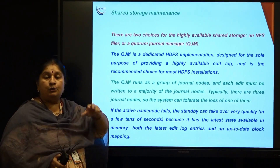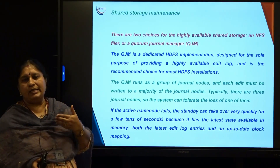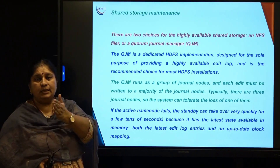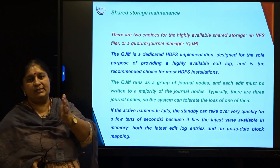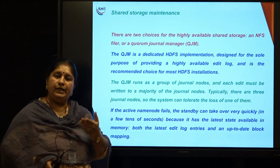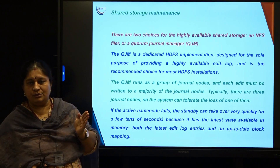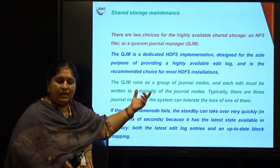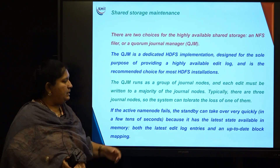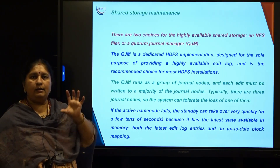Most implementations use QJM — Quorum Journal Manager — which is a dedicated HDFS implementation that provides a highly available edit log. It runs on a group of journal nodes. A journal is like a log book recording whatever is happening in the cluster or HDFS. QJM is implemented on multiple journal nodes so updates are written on multiple systems. Ideally there are three journal nodes, and a minimum of two out of three must be written successfully. This way, even if one journal node fails, another still has the log records. If the active name node fails, the standby contacts the journal node, retrieves the log, applies it, and is ready for operation.